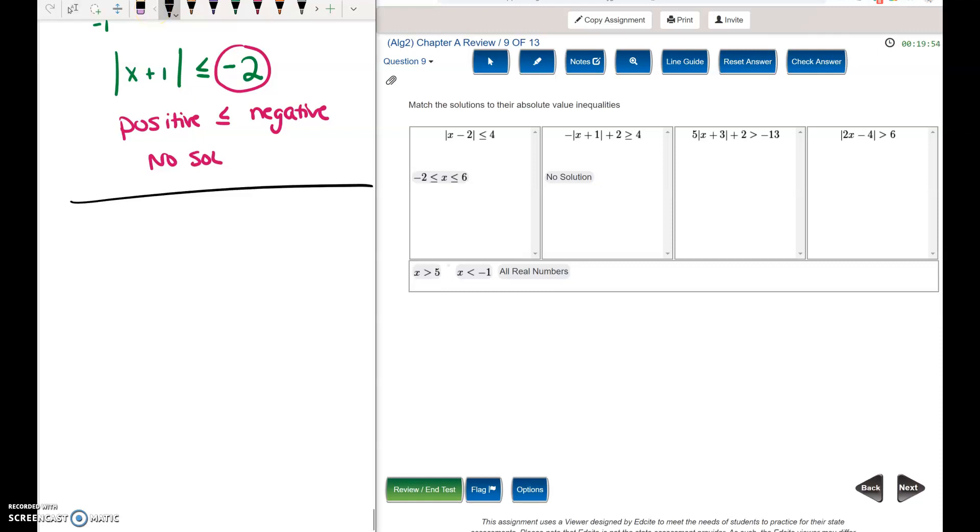On this next one, we have 5 times the absolute value of x plus 3 plus 2 is greater than negative 13. Now you might be saying, oh, there's a negative, but we do still need to get the absolute value isolated first.